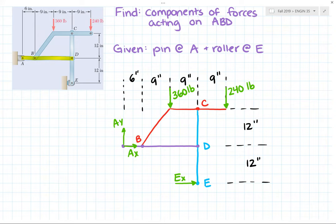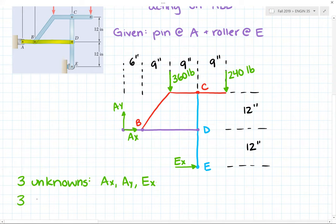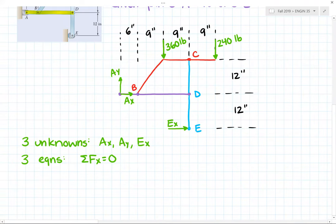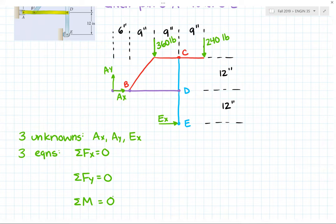That is my free body diagram of the entire frame. I have three unknowns, so I can write three equilibrium equations for the whole frame. It's not going to be the total answer for the problem — I'll still have to do more work after that. The three unknowns are AX, AY, and EX. We have our three equations: sum of forces in X equals zero, sum of forces in Y equals zero, and sum of moments about one point equals zero.